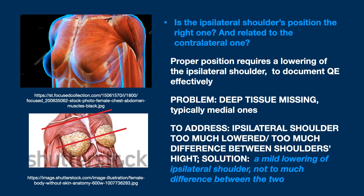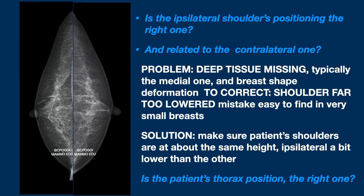To show the outer quadrant at its best, a lowering of the ipsilateral shoulder is recommended, but not too much, because this leads to breast deformation and the missing of deep tissue, especially the medial parts. Be careful to check the contralateral shoulder too, so that it is not at a very different height. Example of excessive lowering of the ipsilateral shoulder: it produces an elongated shape of the breast which is not real at all. Of note, the pectoralis major shifts laterally — that is to say, the position of the thorax is not perpendicular to the detector.